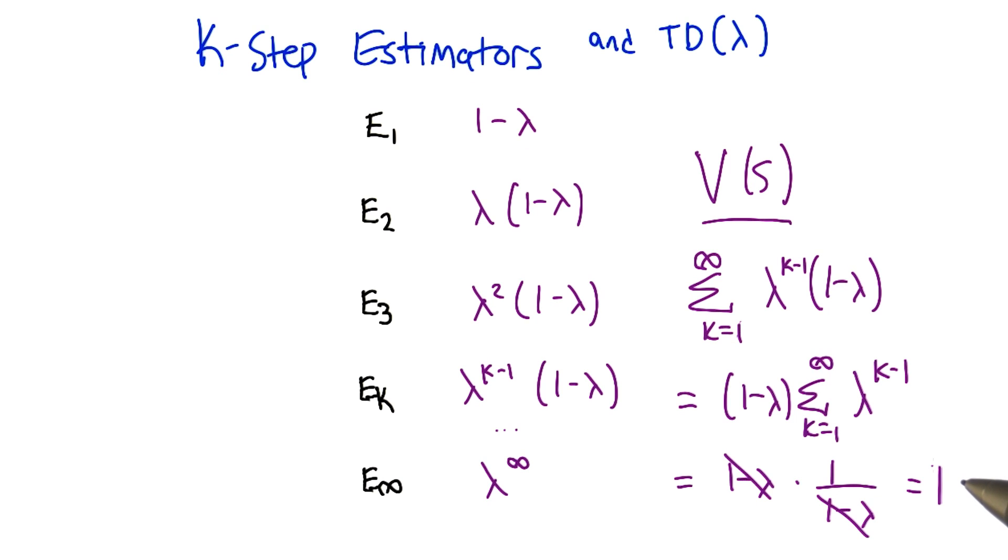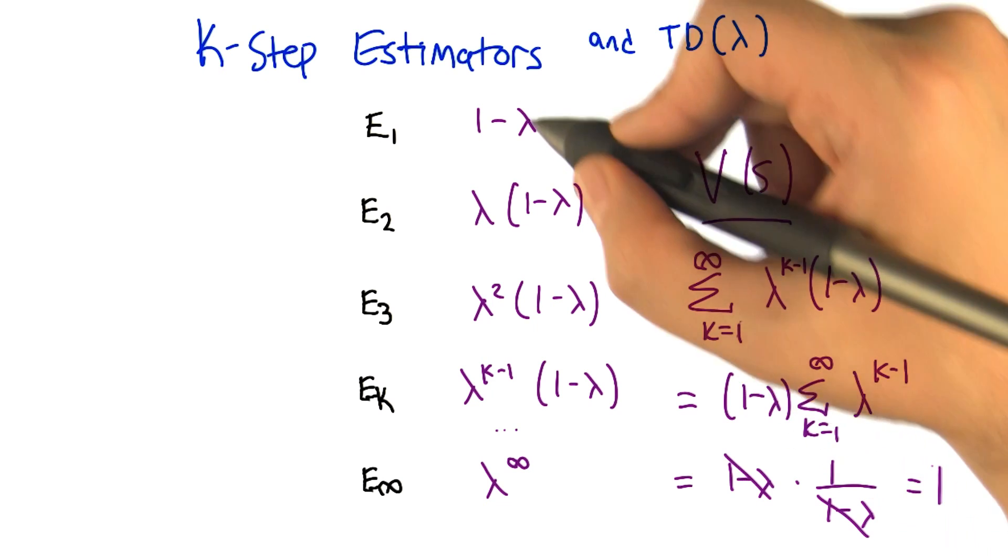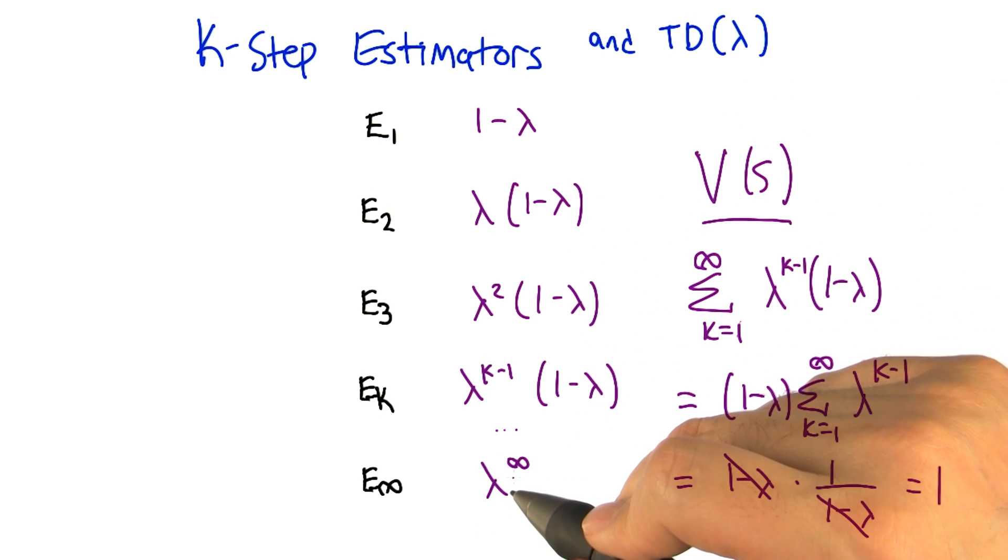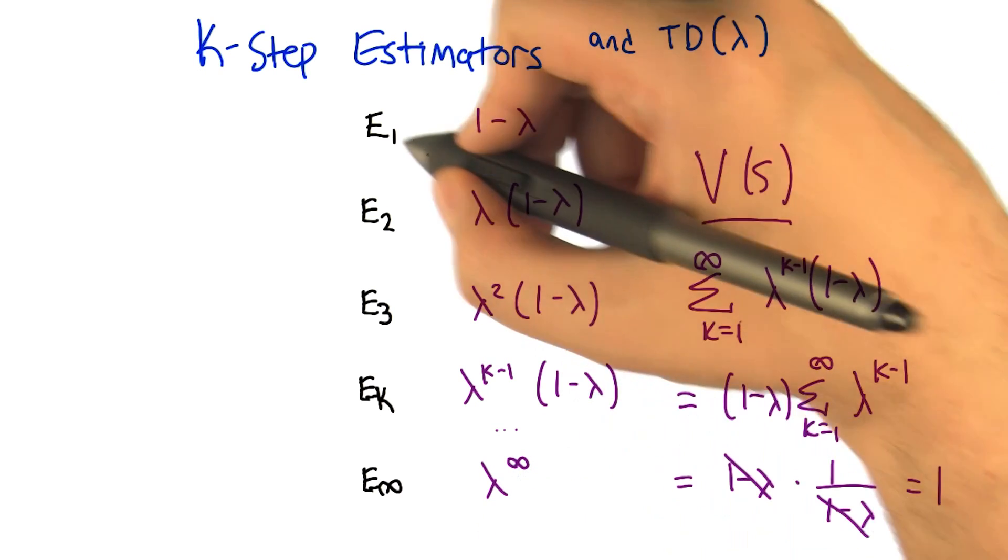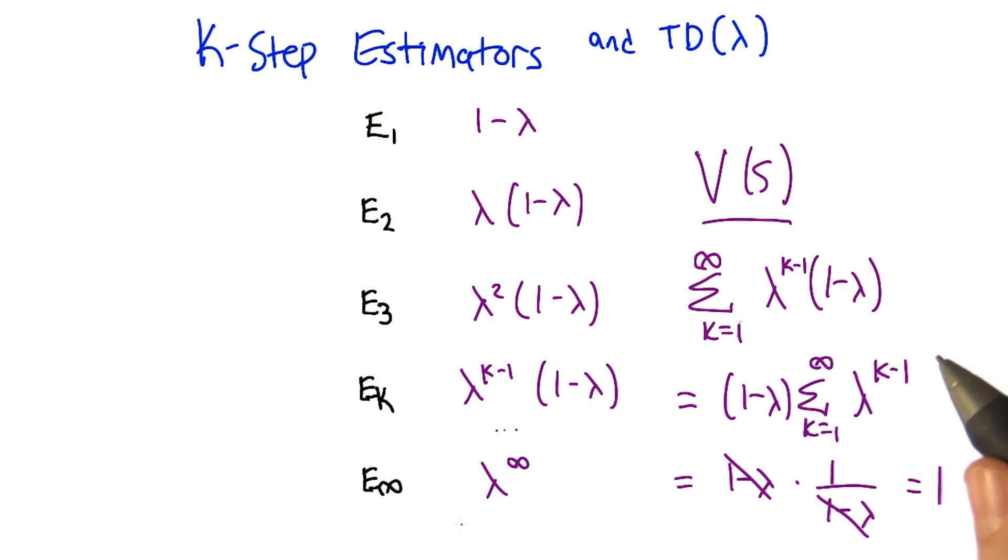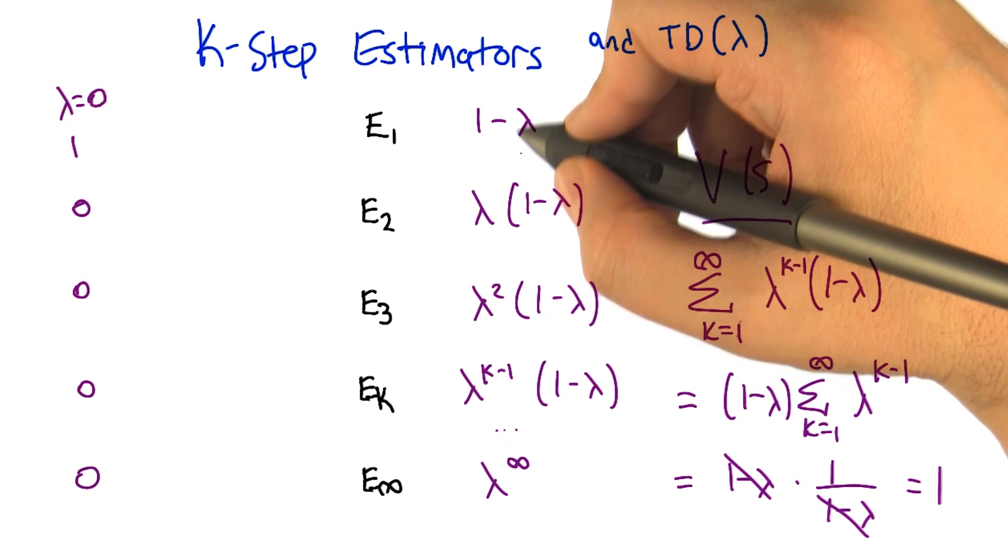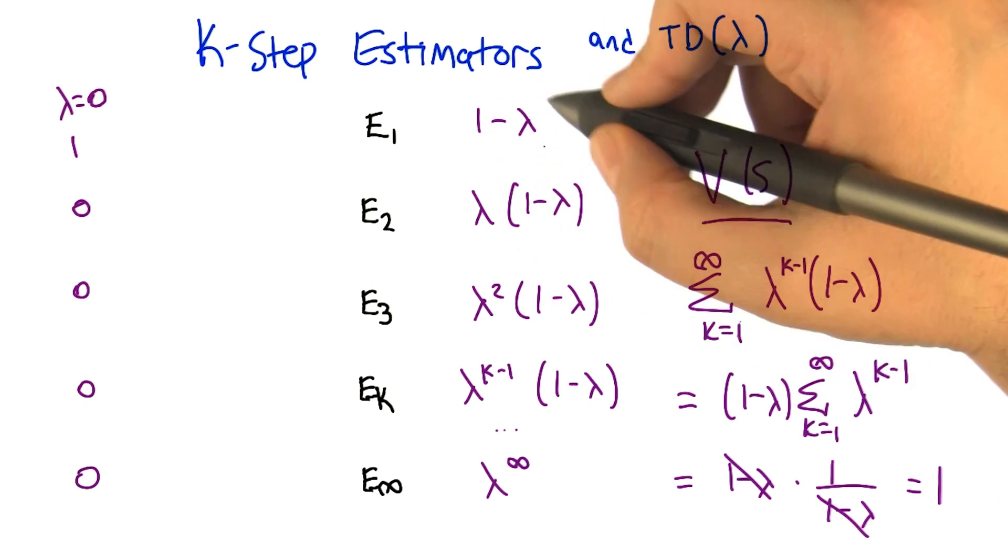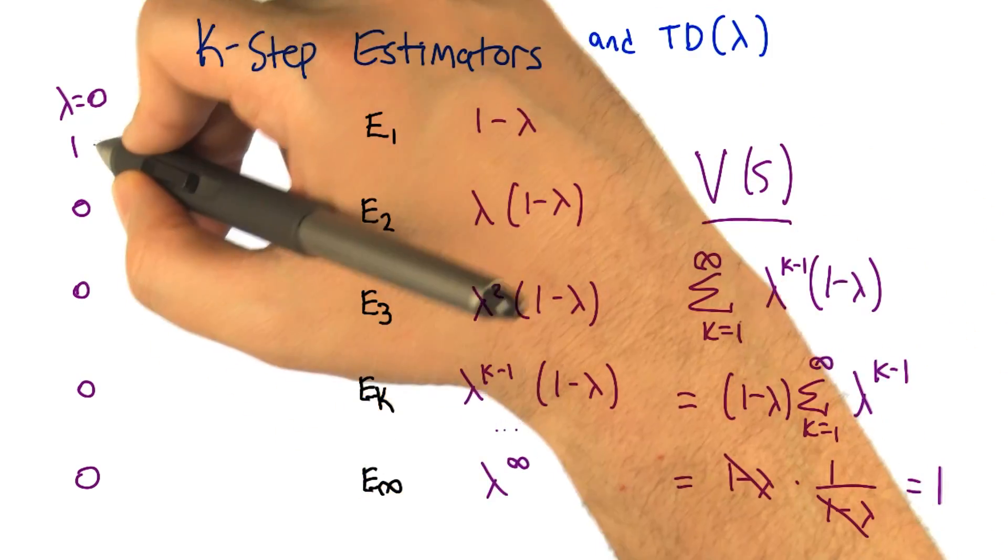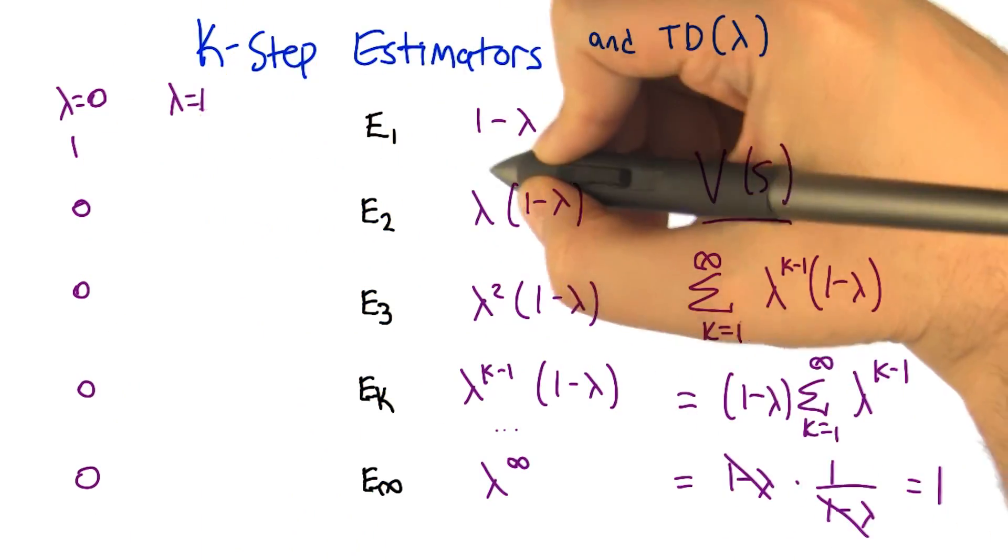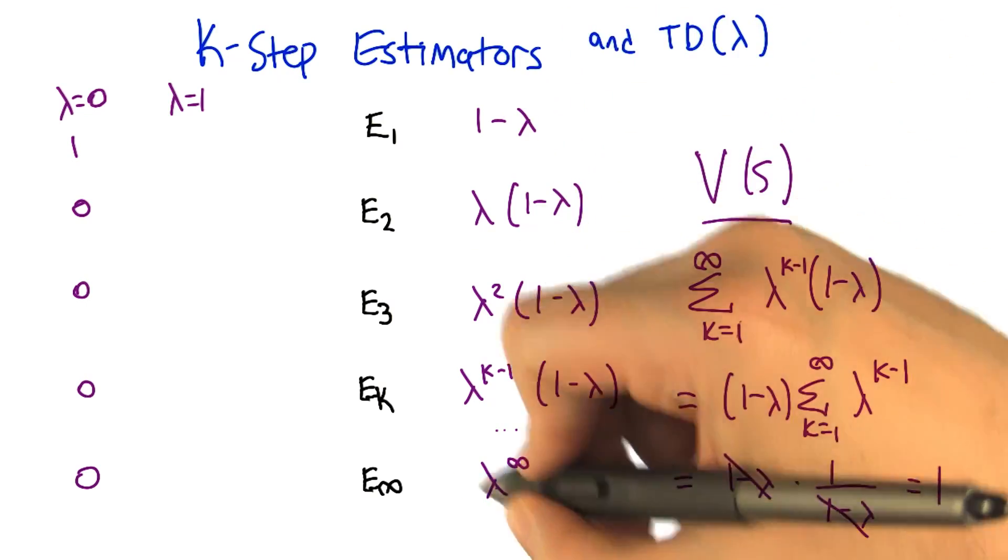If lambda equals one, though, what happens then? These are all zeros, and then this infinity one is one to the infinity, which is just one. So when lambda is one, we put all our weight on this last estimator. And what happens when lambda is zero? So if lambda is zero in this case, we get a weight of one on this first estimator, and zero on all the rest, which I'll write down this way. And when lambda is one, we get zero for all these except for the last one.